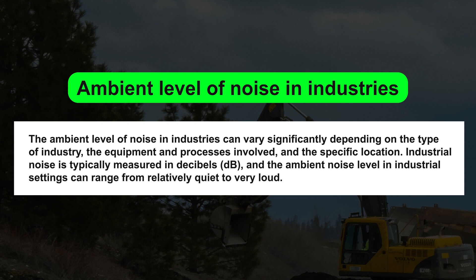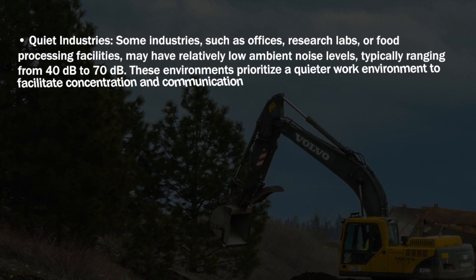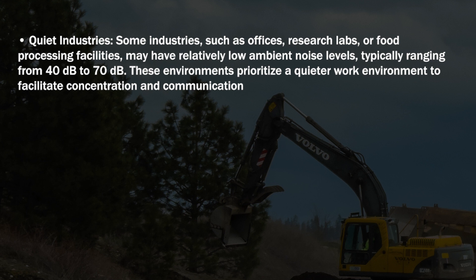Let us discuss the ambient level of noise in industry. The ambient noise level in industry can vary significantly depending on the type of industry, the equipment and processes involved, and the specific location. Industrial noise is typically measured in decibels. Quiet industries such as offices, research labs, and food processing facilities may have relatively low ambient noise levels, typically ranging from 40 to 70 dB, prioritizing quieter environments for concentration and communication.